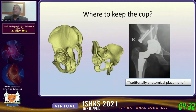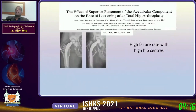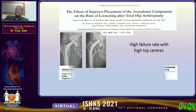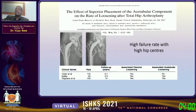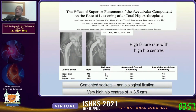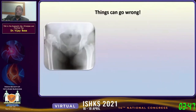The burning issue in reconstruction of the dysplastic socket is where to place the cup. Traditionally, anatomic placement was preferred with grafting, maintaining the native center of the head. This came from a landmark paper by Mark Pagnano, who described high failure rates with high hip centers — but remember, those were all cemented sockets. Cemented sockets are non-biological fixation, and the hip centers were very high — more than 3.5 centimeters — probably explaining those failures. Kelly and Yoder also published high failure rates with high hip centers using cemented sockets.